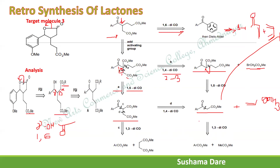The next fragment is a 1,3-dicarbonyl compound. Whenever a 1,3-dicarbonyl compound is present, simply disconnect the bond in the direction of the alpha carbon. The leaving group here is OCOOCH₃, and the other part is MECOOCH₃. This corresponds to an ester condensation reaction.